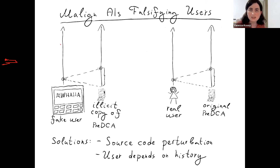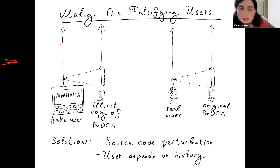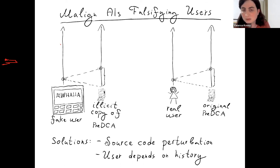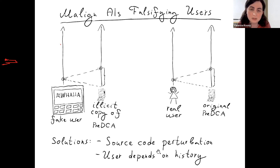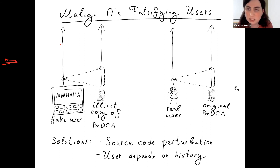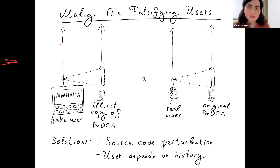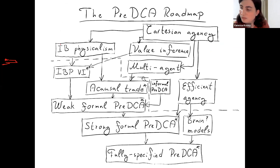Another potential issue: if our AI coexists with other bad AIs, one of those bad AIs can try to copy our AI's source code and use it to create a fake user to compete with our real user. We can try to solve this by introducing secret perturbations into the source code that the bad AI won't know about, or by having a scheme where the user depends on the actual observed history — then our AI follows the real user and the bad AI follows the fake one, but we still have our good AI.